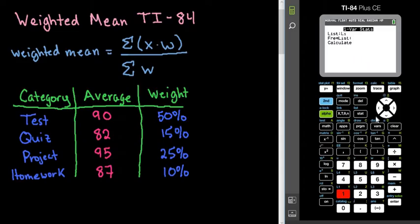Your list is L1. That's where we put our averages for each category. So L1 is where we put this. Our weight would be L2. This is going to be our frequency. So this would go in our frequency list.